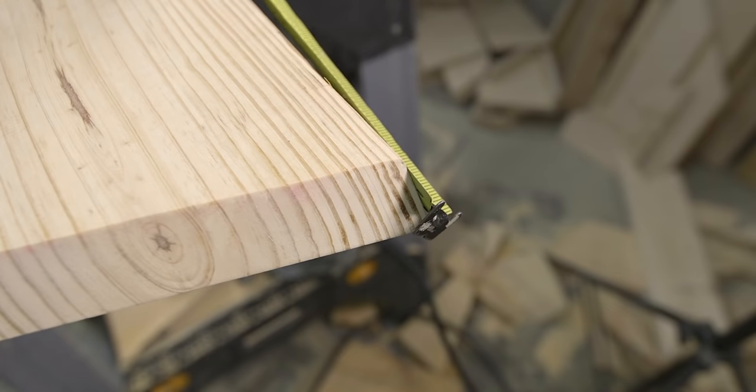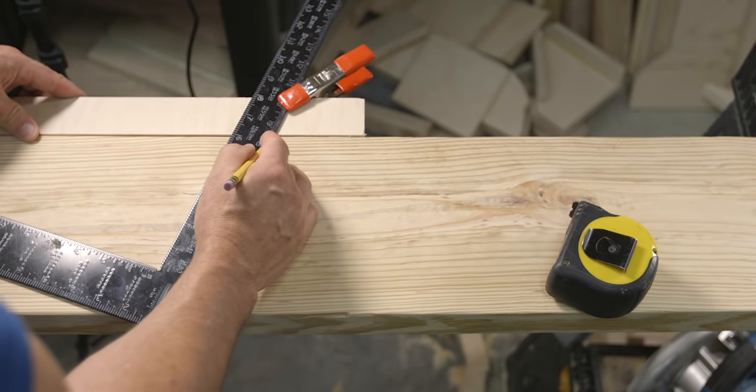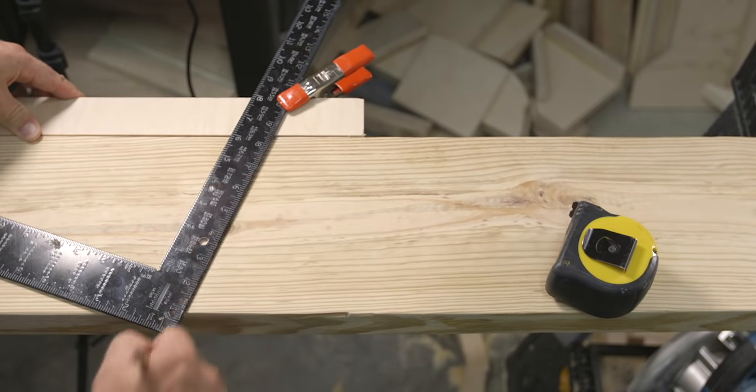From there, take your tape measure and hook it over the point, and measure down the rafter length, which is 34 and 7 eighths, make a mark, and draw another line.